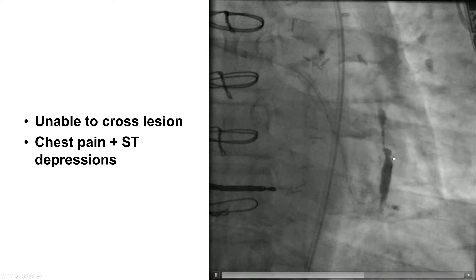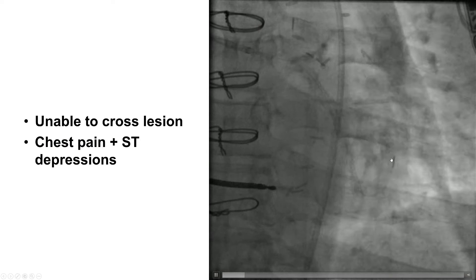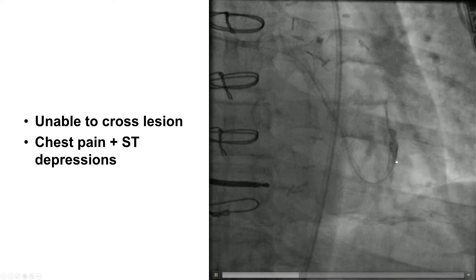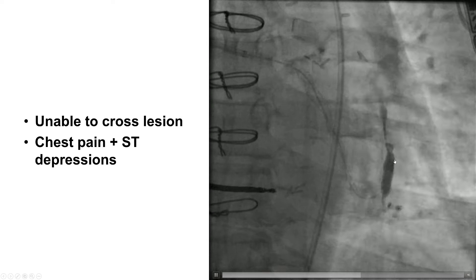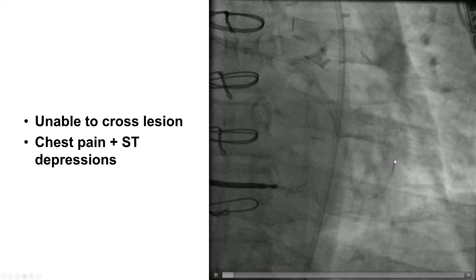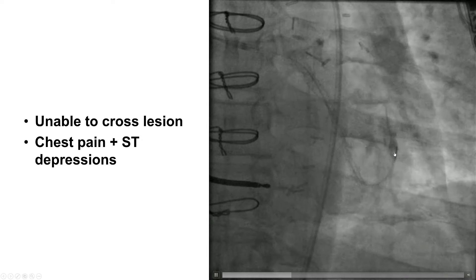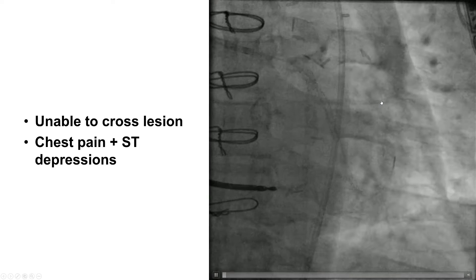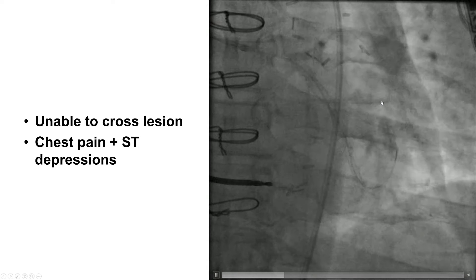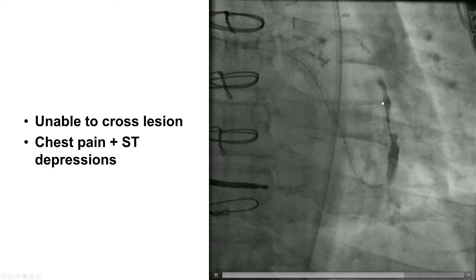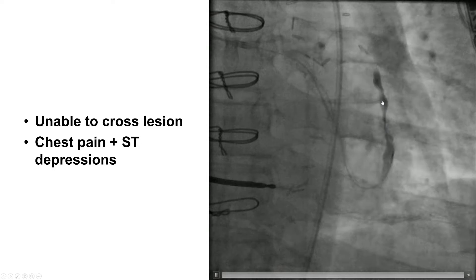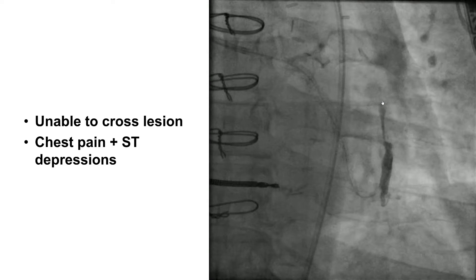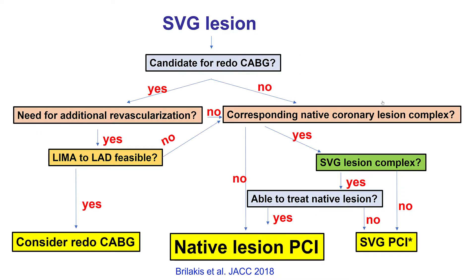We attempted to treat this SVG segment. We used a microcatheter and multiple guide wires. However, we were unable to advance a wire through the occlusion, and during those attempts the patient did develop chest discomfort and ST segment depressions. What is the next step in this case?